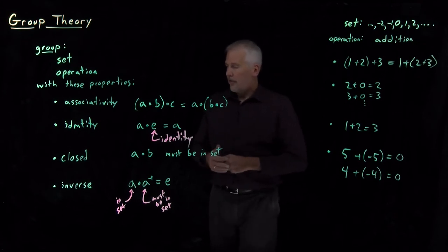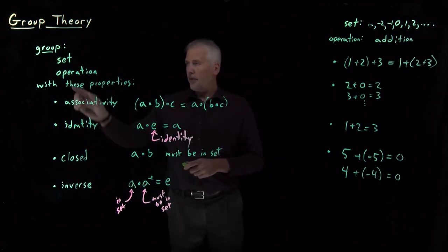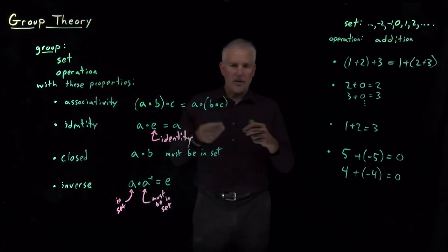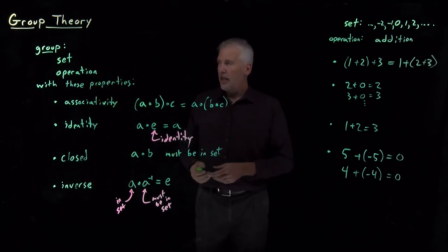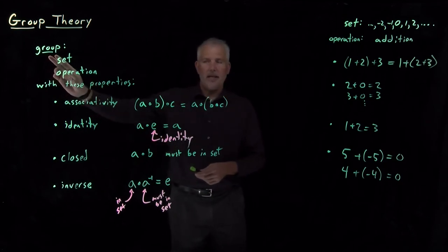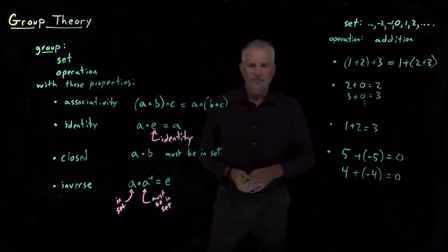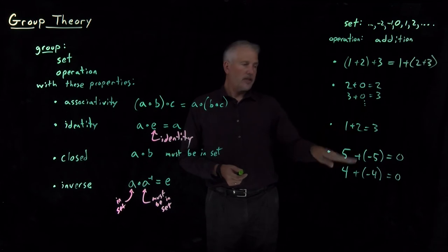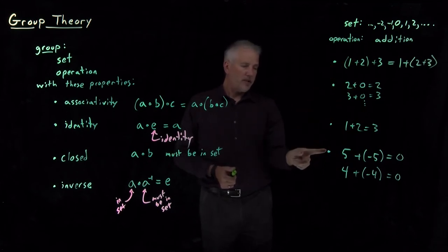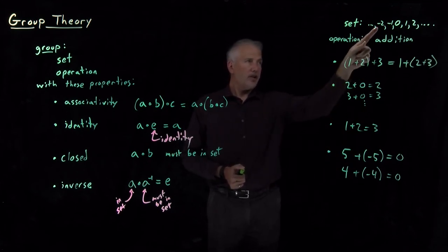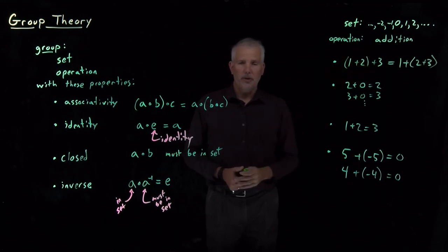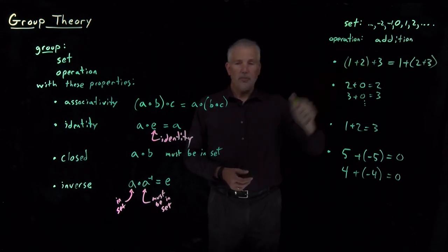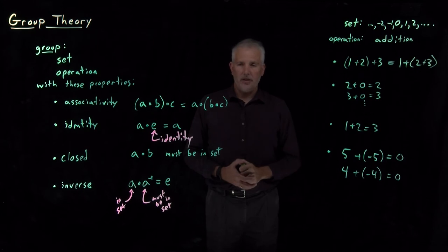Those are the four properties. If you have a set, you have an operation for how to combine elements of that set, and the set under the operation has these four properties, then we say that the set and operation form a group. Our example has shown, by validating each of the four properties, that the integers under the operation of addition do form a mathematical group. So we say: integers form a group under addition.